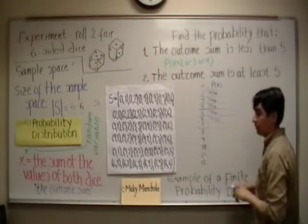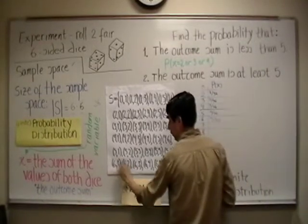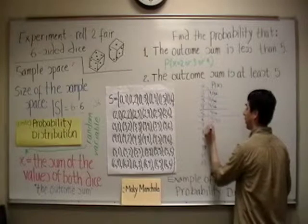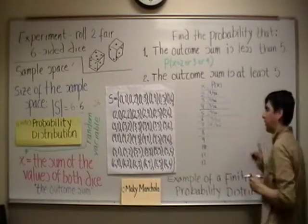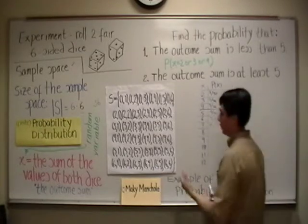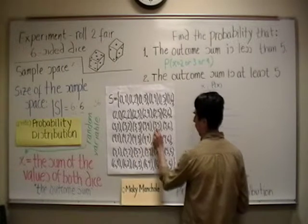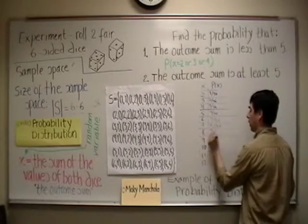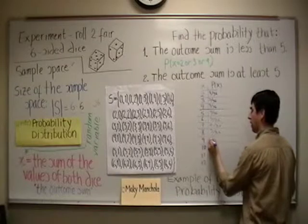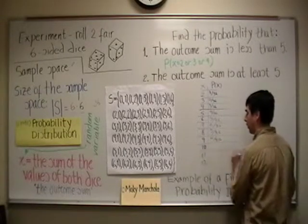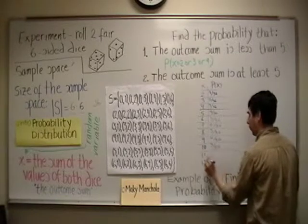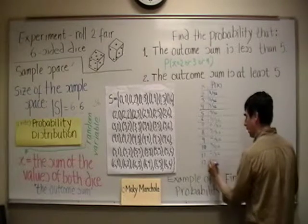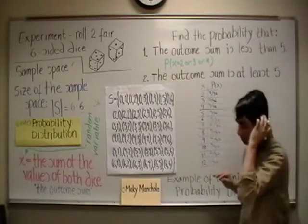A sum of 7 can be achieved six ways: (6,1), (5,2), (4,3), (3,4), (2,5), (1,6) — so the probability is 6/36. The probability of a sum of 8 is 5/36, since there are five ways: (6,2), (5,3), (4,4), (3,5), (2,6). As we finish constructing the table, a clear pattern emerges that is also visible just by looking at the probability column.